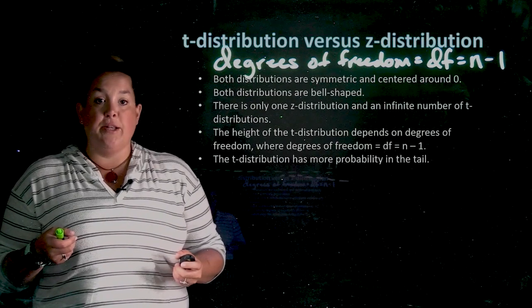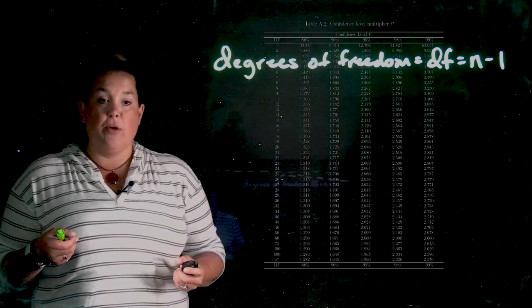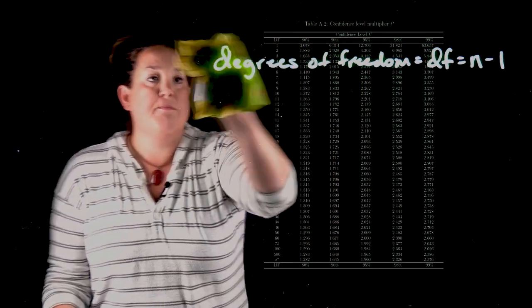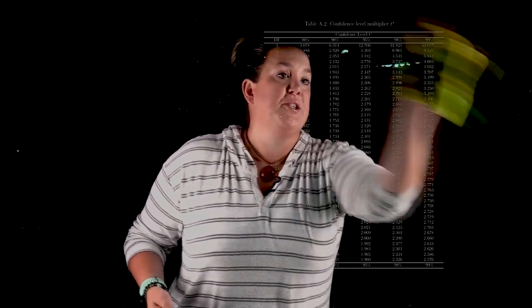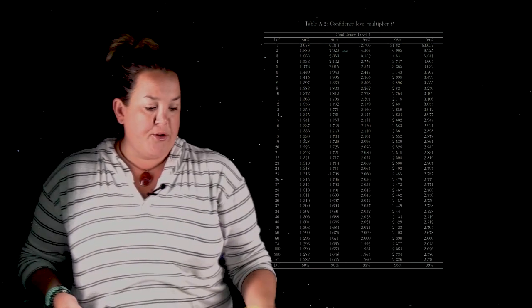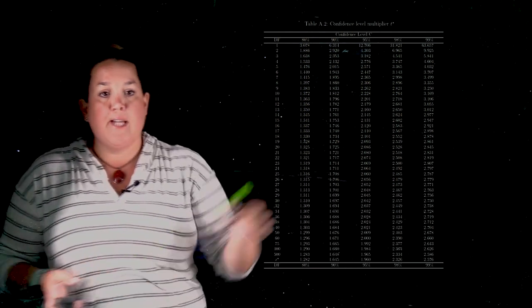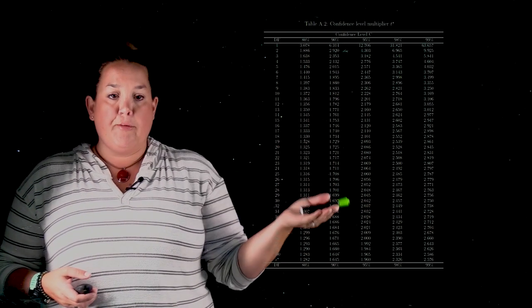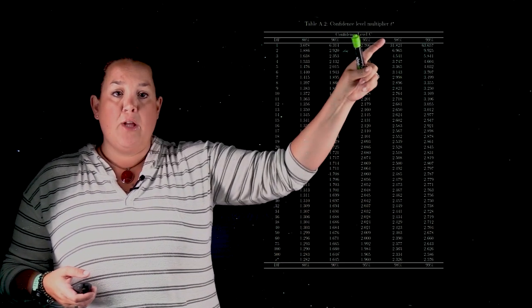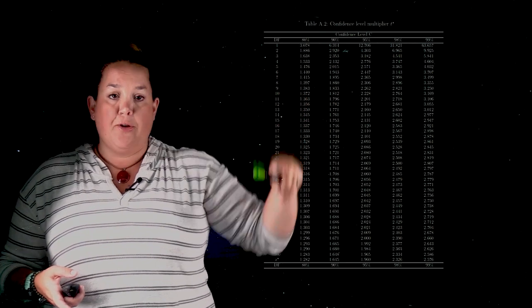Now one challenge with all of this, if we go back, with the t-distribution changing depending on the degrees of freedom, that means that you will need to use a table to look up what the multiplier is, depending on how confident you want to be and what the degrees of freedom are.